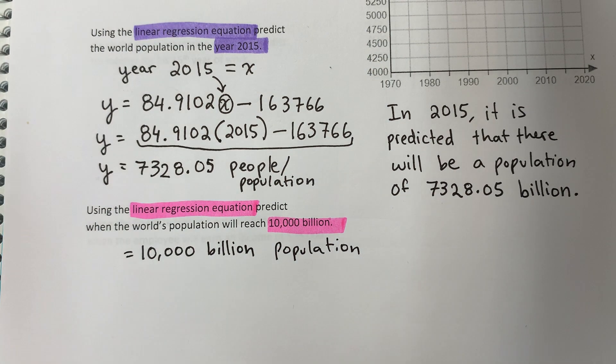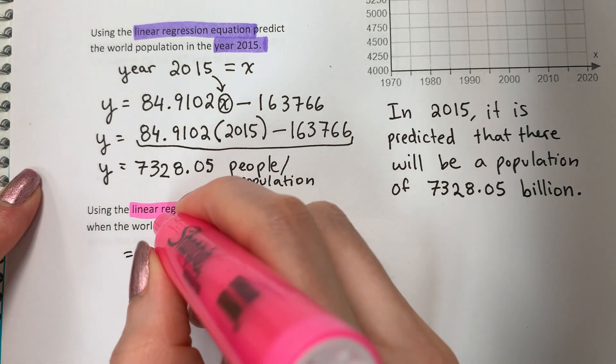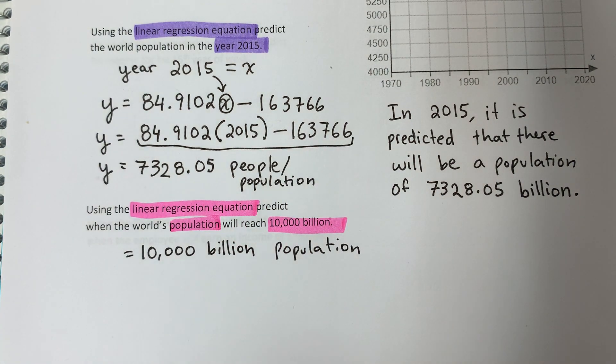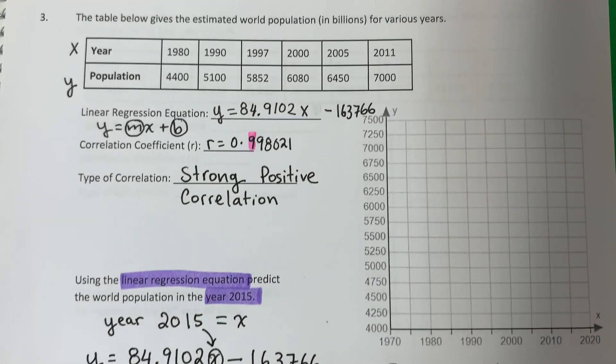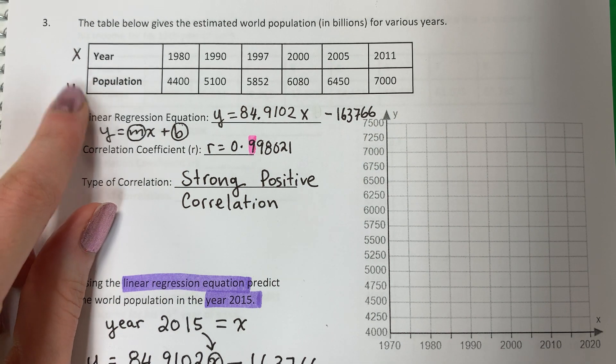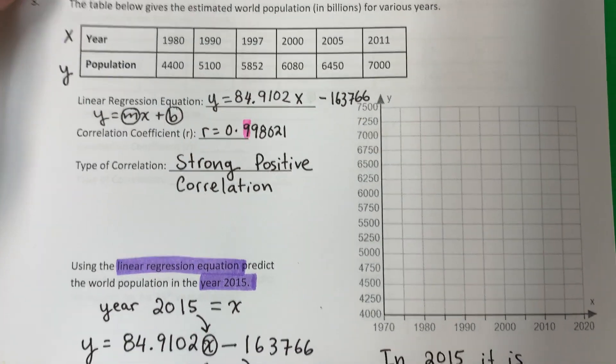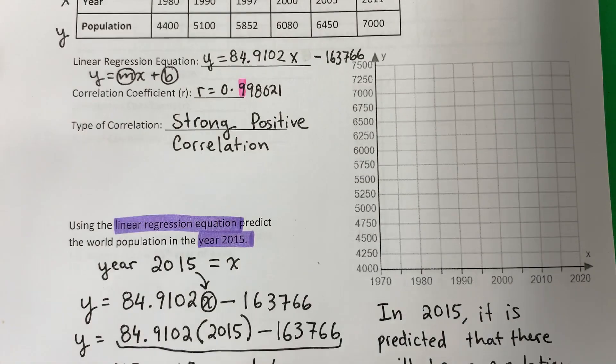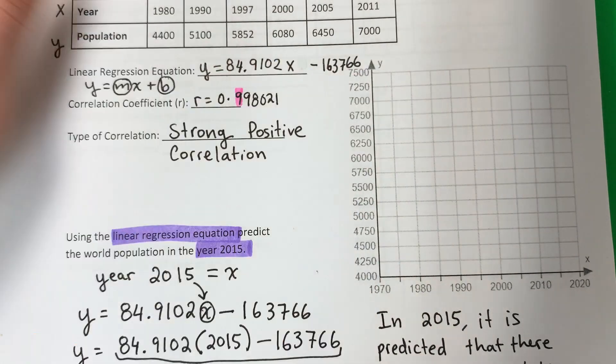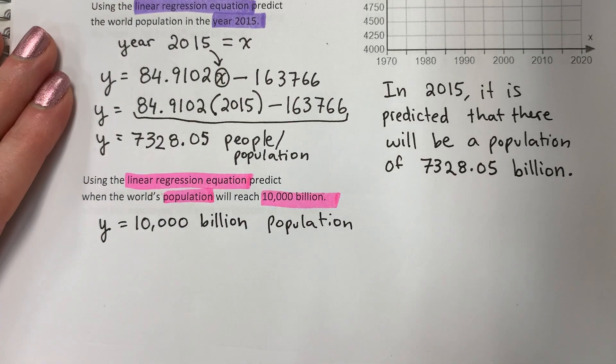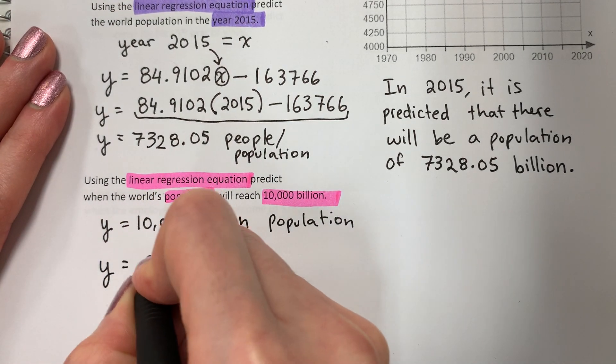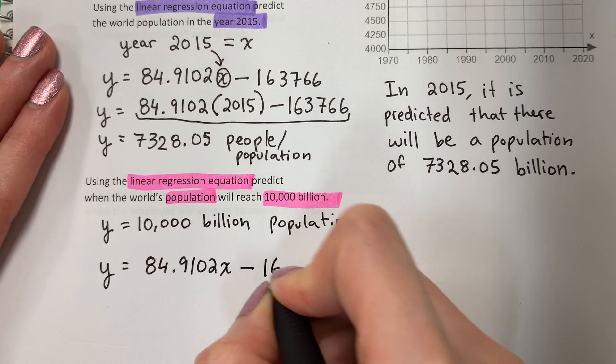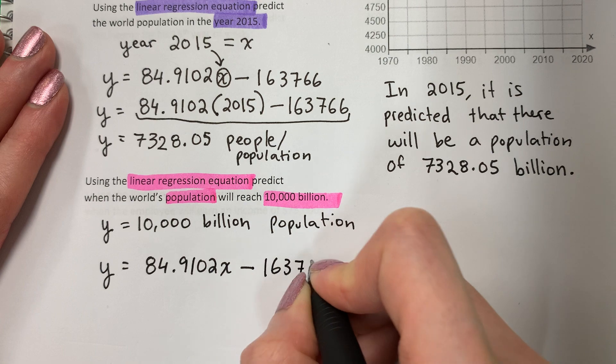Let me go ahead and color population here. What is population? ¿Cuál es la población? X or Y? ¿X o Y? Y. And we're going to use the same equation, la misma ecuación. Let's go ahead and copy that down. Y equals 84.9102X minus 163,766.